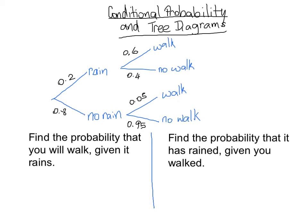Now we're going to look at conditional probability. Conditional probability is the probability or the chance of something happening knowing that something else happened. For example, if I know that it rained — I'm certain that it rained — what's the chance that I will walk? That is conditional probability.